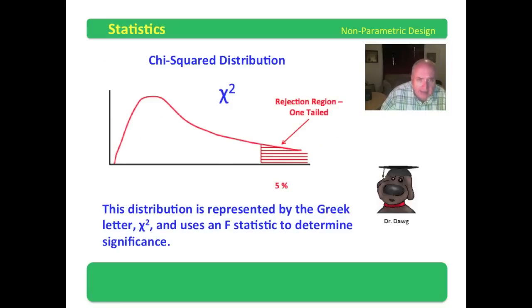This is called a chi-square distribution. This is the Greek letter chi, and that's a squared, the chi-square distribution. And it uses an F statistic to determine significance.